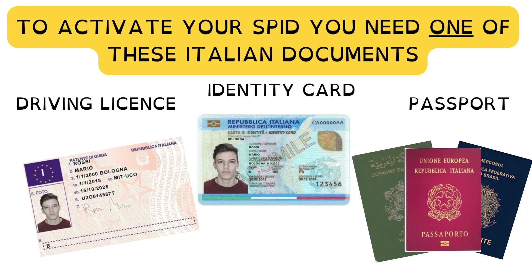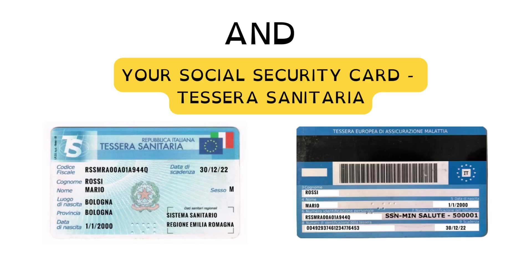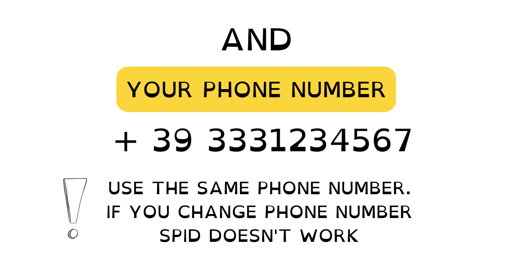To activate your speed, you need one of these Italian documents: driving license, identity card, passport, and your social security card — tessera sanitaria — and your phone number.